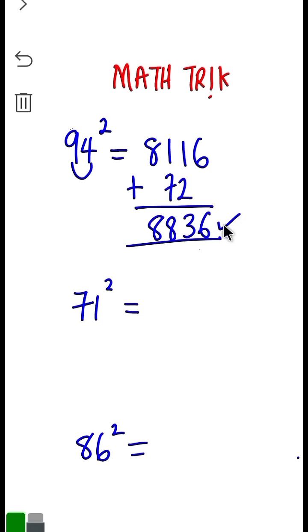And that's our answer. Number 2: 7 squared is 49, 1 squared is 1.